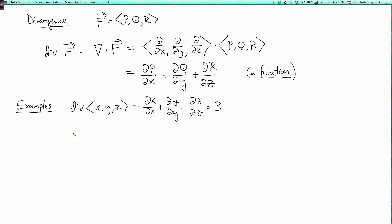If we switch the sign, so minus x, minus y, minus z, then we're just going to multiply everything here by minus one, so the divergence is minus three.